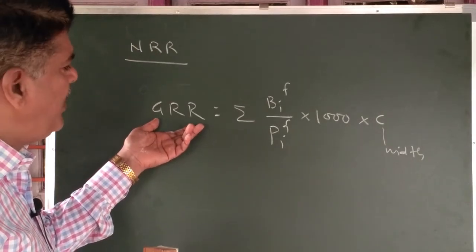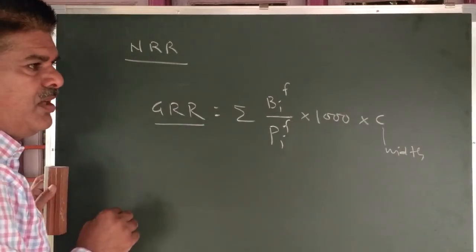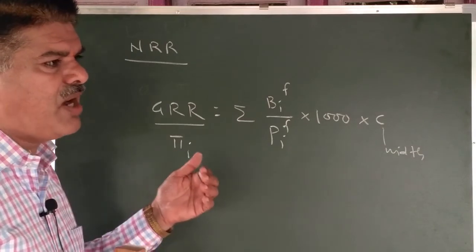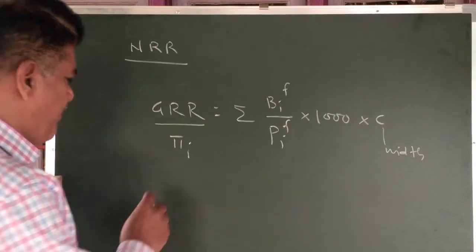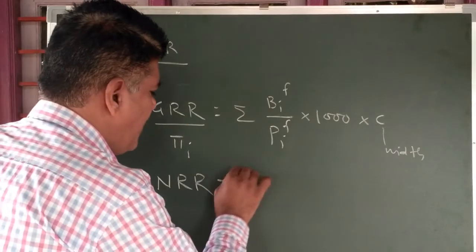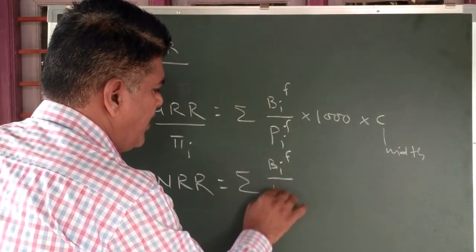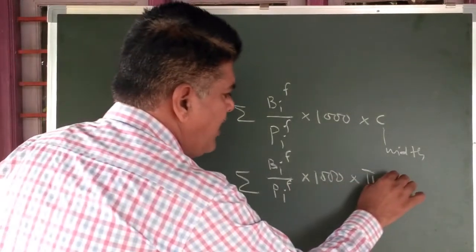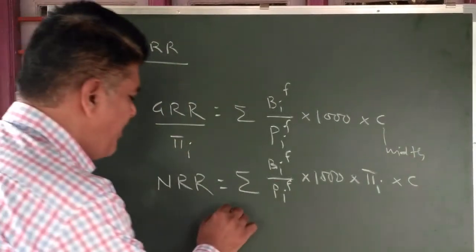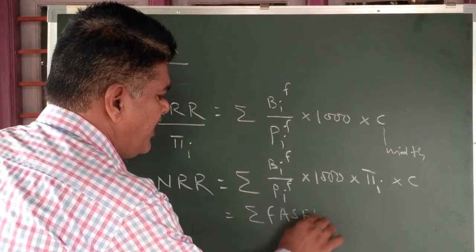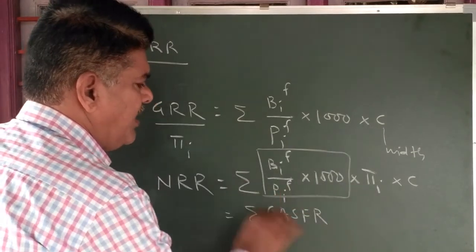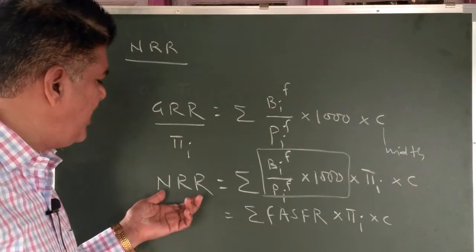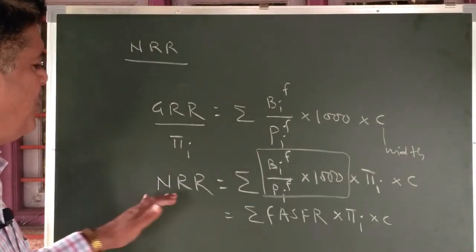This is the formula for Gross Reproduction Rate. In NRR, we simply add Pi_i, the survival factor. The survival factor represents the probability that a girl child will survive up to a specific period i in her child-bearing age group. So NRR = summation of (Bif divided by Pif) into 1000, multiplied by the survival factor Pi_i, multiplied by C. This is the same as summation of the female age-specific fertility rate multiplied by Pi_i multiplied by C. This is NRR, which takes into account the survival factor.